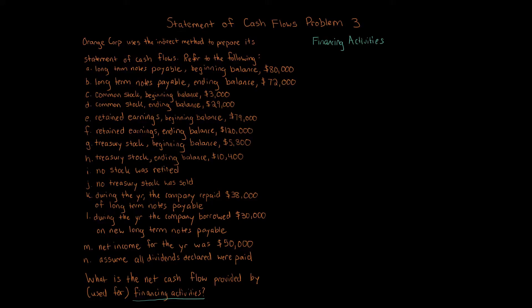We'll do the stockholder's equity side later, but first let's focus on liabilities. Going through these transactions, items A and B deal with long-term notes payable beginning and ending balances, while K and L tell us the amounts repaid and borrowed. The beginning and ending balances for notes payable? Those are red herrings.